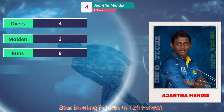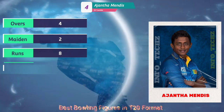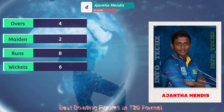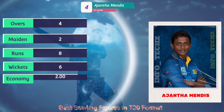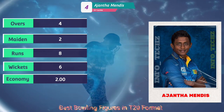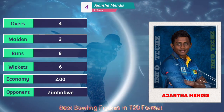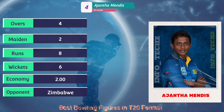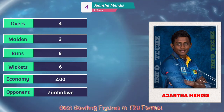At number four, that gentleman bowled four overs, two maidens, eight runs, six wickets, with an economy of two runs per over. The opponent was Zimbabwe.